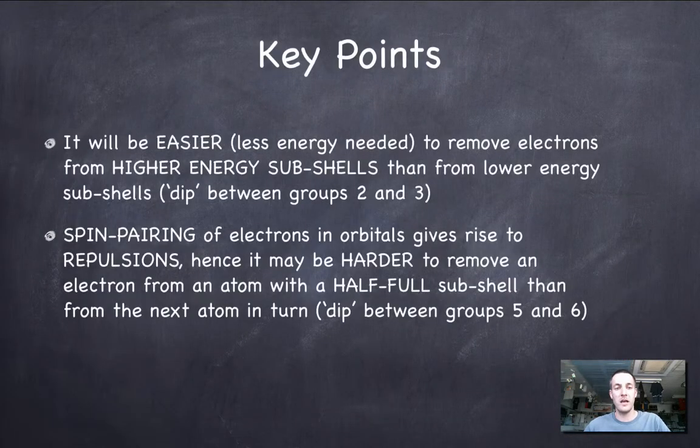So just to summarise the key points there, it's easier to remove electrons from higher energy subshells than it is from lower energy subshells. So, for example, it's easier to remove electrons from 2p than it is from 2s. So that's why it's easier to remove electrons from boron than beryllium, or why there's a dip between groups 2 and 3. There's a dip between groups 5 and 6, because it's harder to remove an electron from an atom with a half-full subshell, which elements in group 5 will have, than it is to remove an electron from the next atom along, because that one will have paired electrons in one of the orbitals, and that spin pairing gives rise to a repulsion.